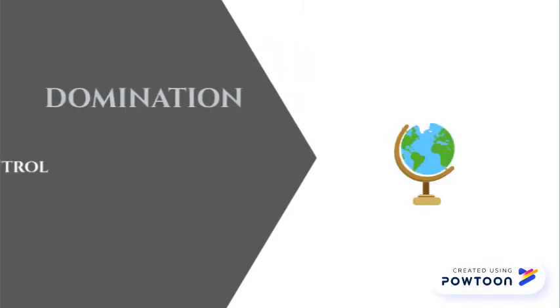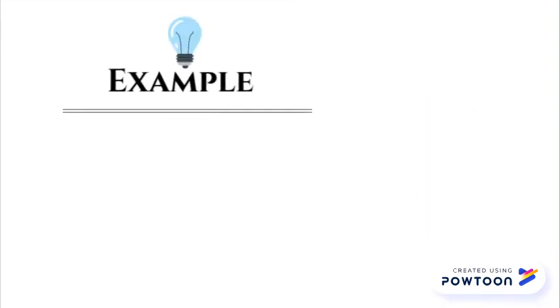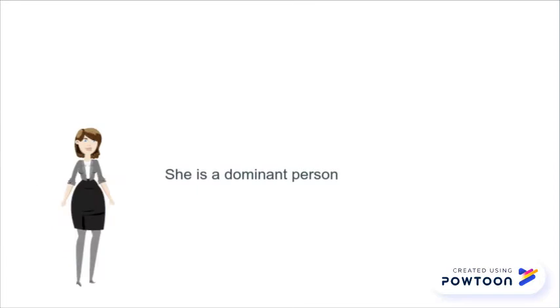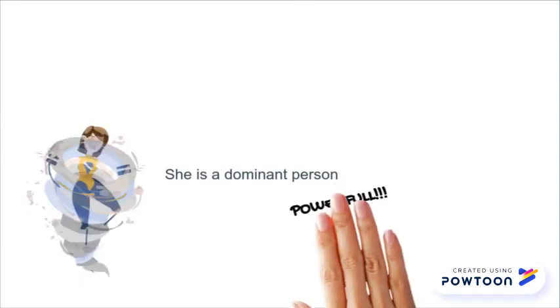In general, domination means power or control. Let's take an example. She is a dominant person. That means she is a powerful person.